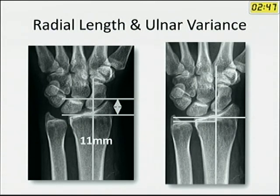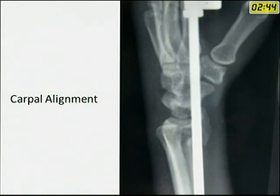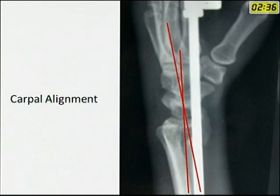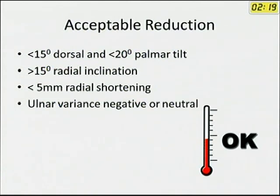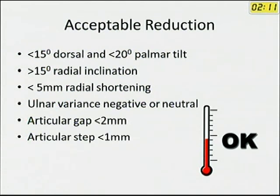Ulnar variance is also measured. Another angle is the carpal alignment: the axis of the capitate and the axis of the radius are drawn, and the apex of the angle should cross inside the carpus; if it crosses outside, there is carpal malalignment. Acceptable reduction is 15 degrees dorsal and 20 degrees palmar tilt, 15 degrees radial inclination, less than 5 mm radial shortening, ulnar variance either negative or neutral, articular gap less than 2 mm, and articular step less than 1 mm.